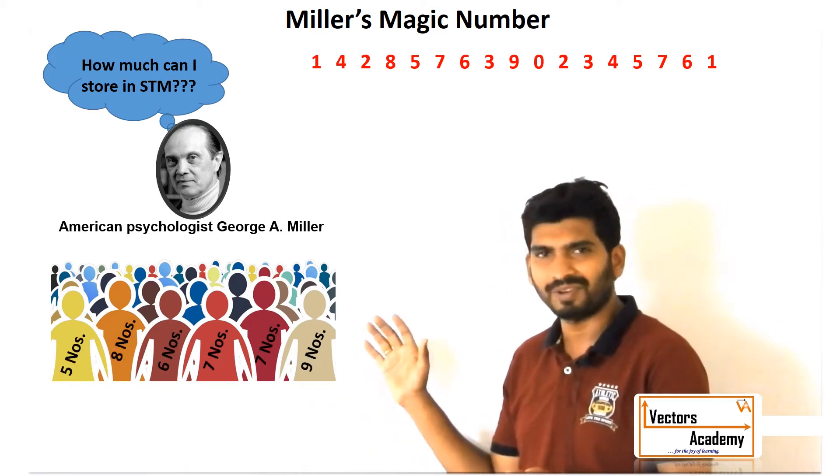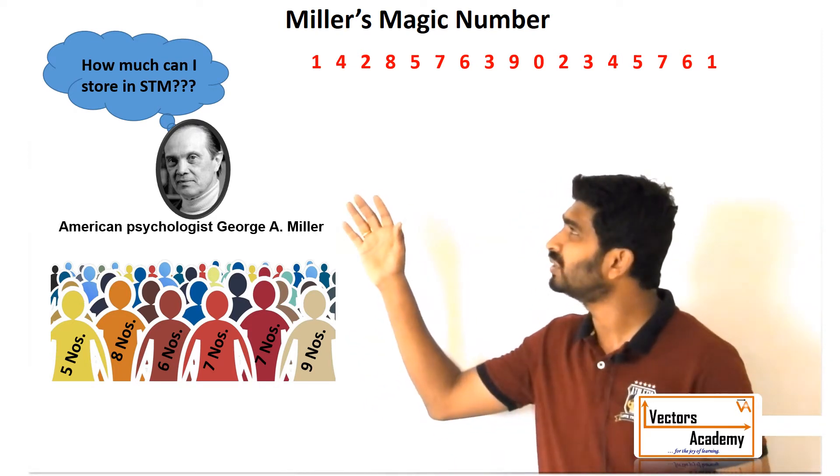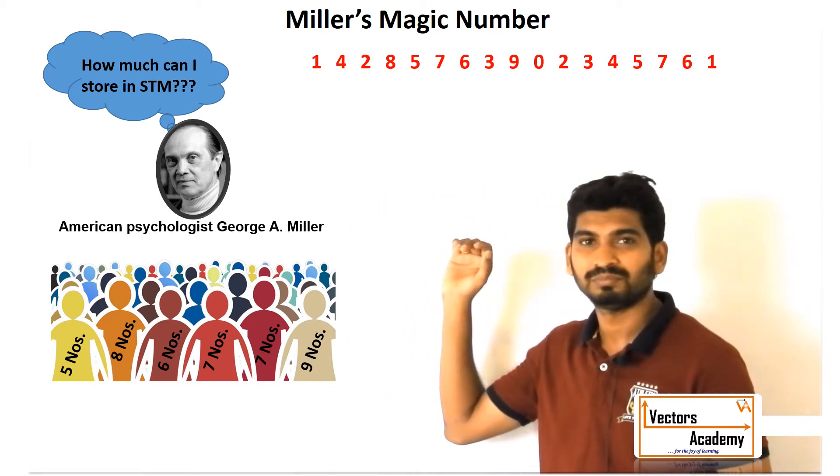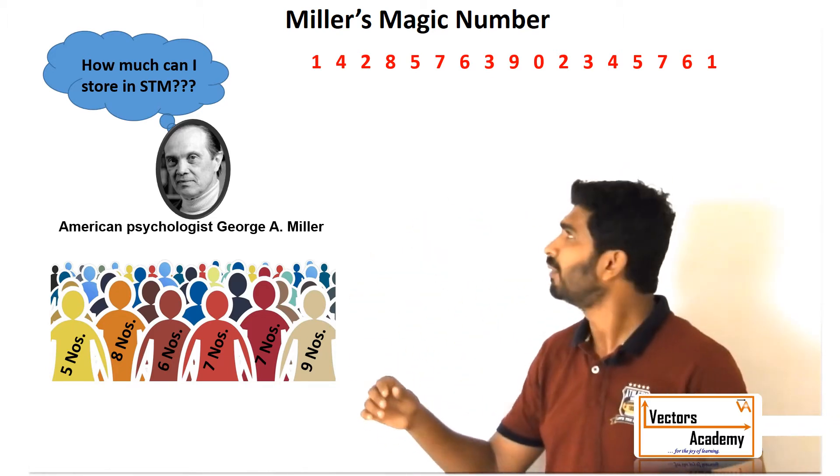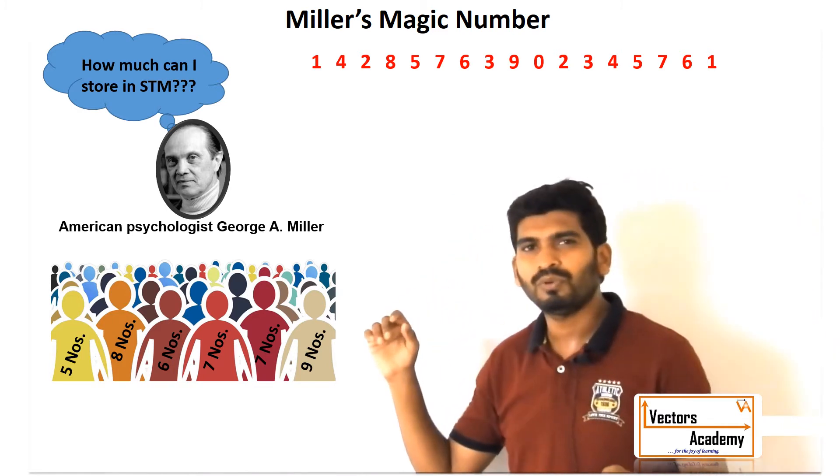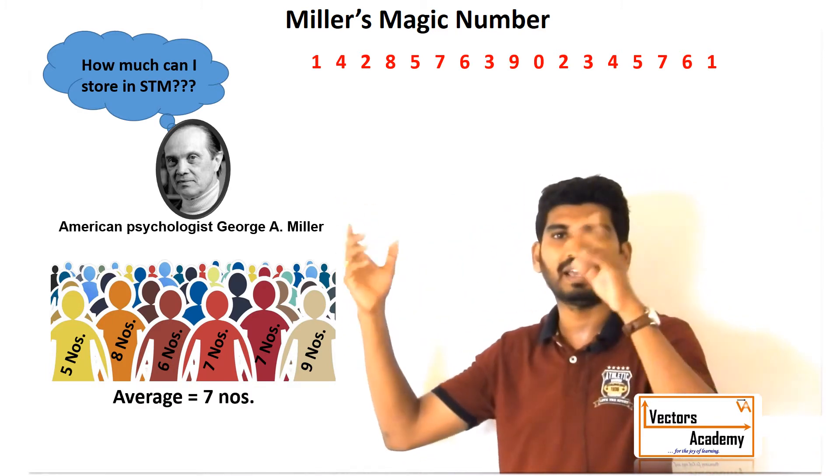What he observed is most of the individuals—95% of the individuals—were able to remember either five numbers or nine numbers, with some remembering six, seven, or eight numbers in between.